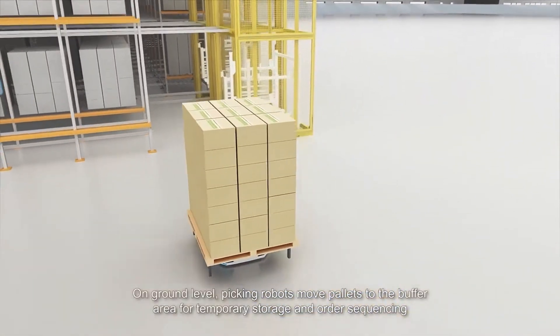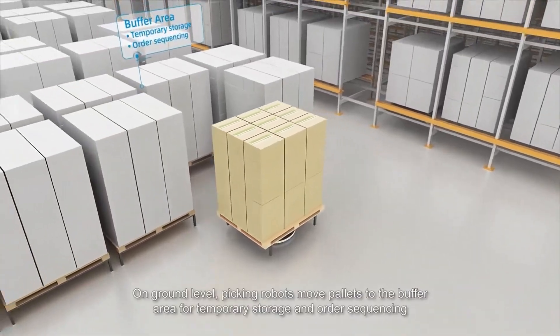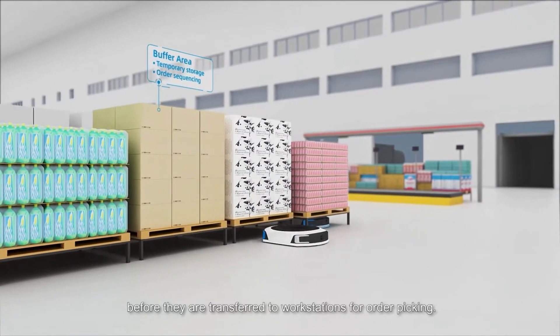On ground level, picking robots move pallets to the buffer area for temporary storage and order sequencing before they are transferred to workstations for order picking.